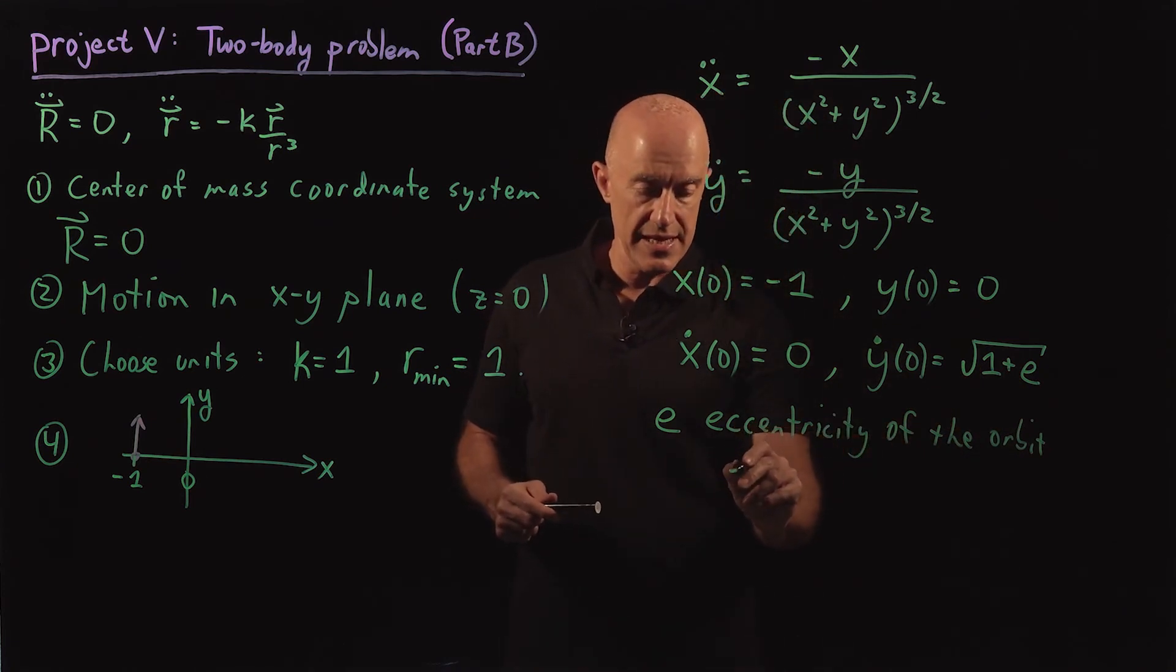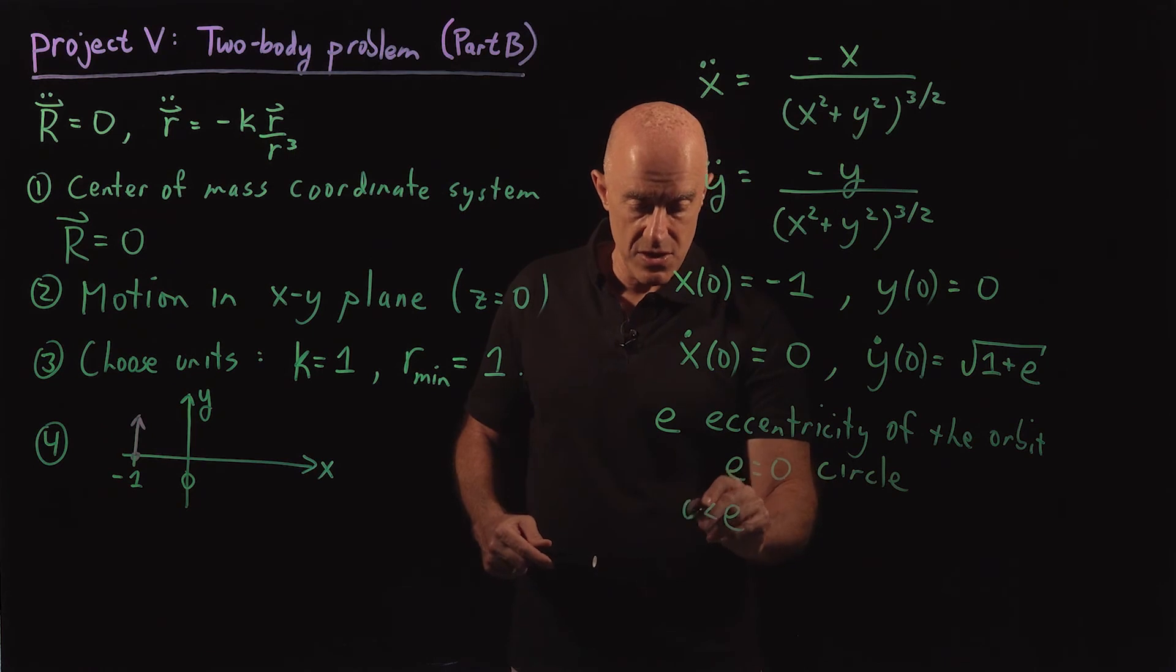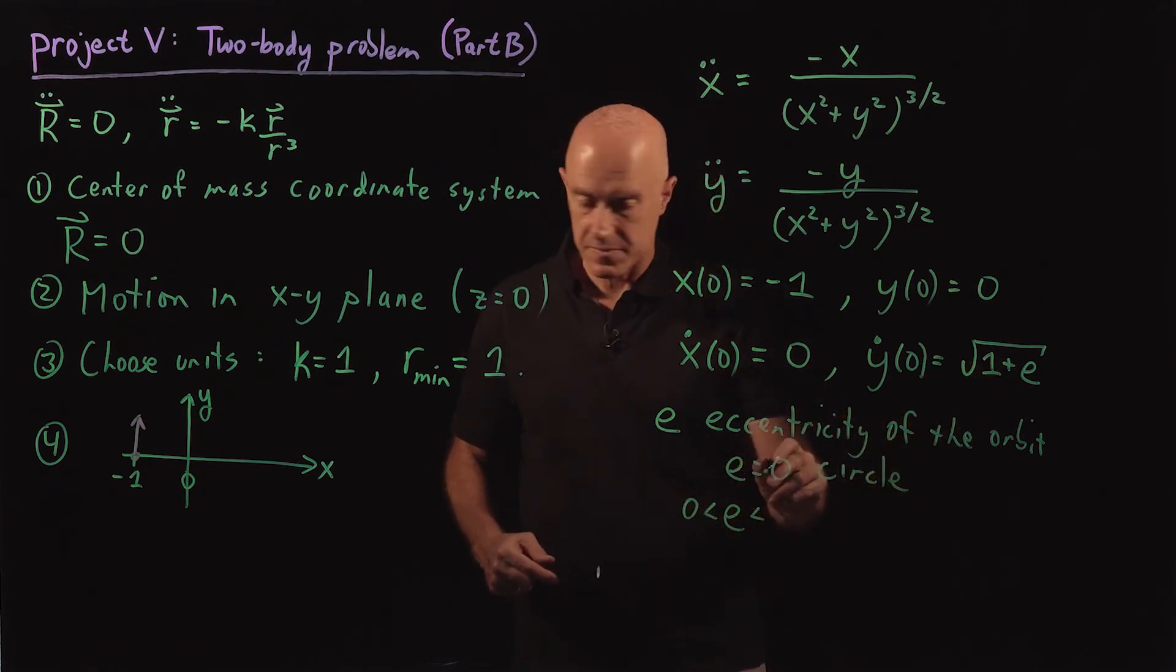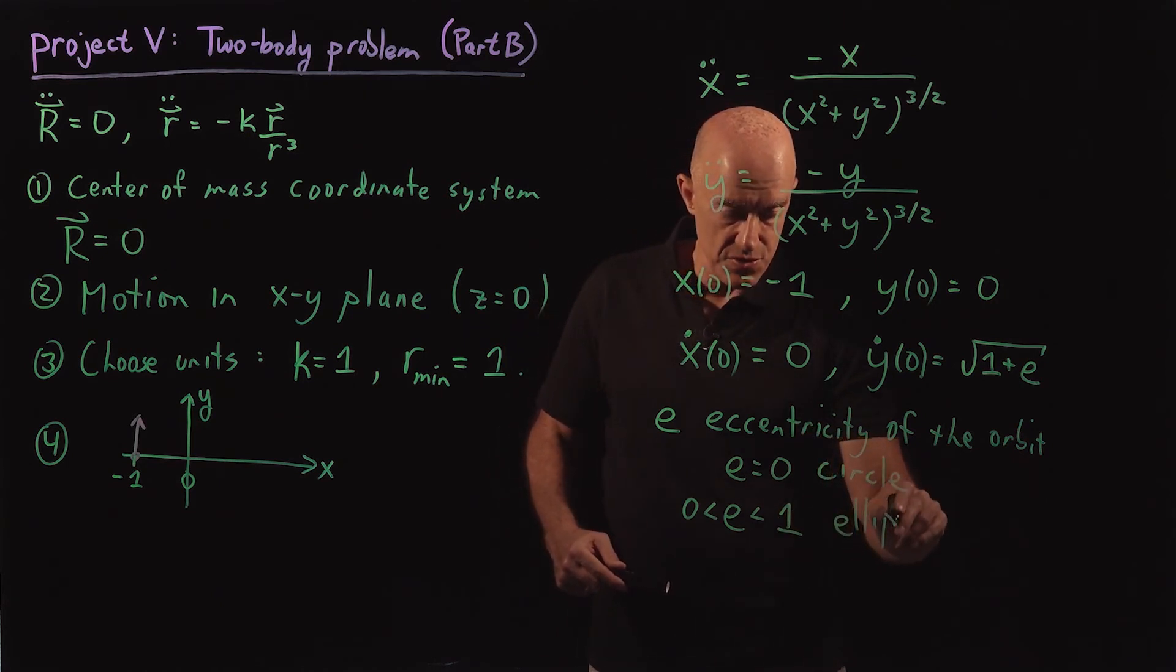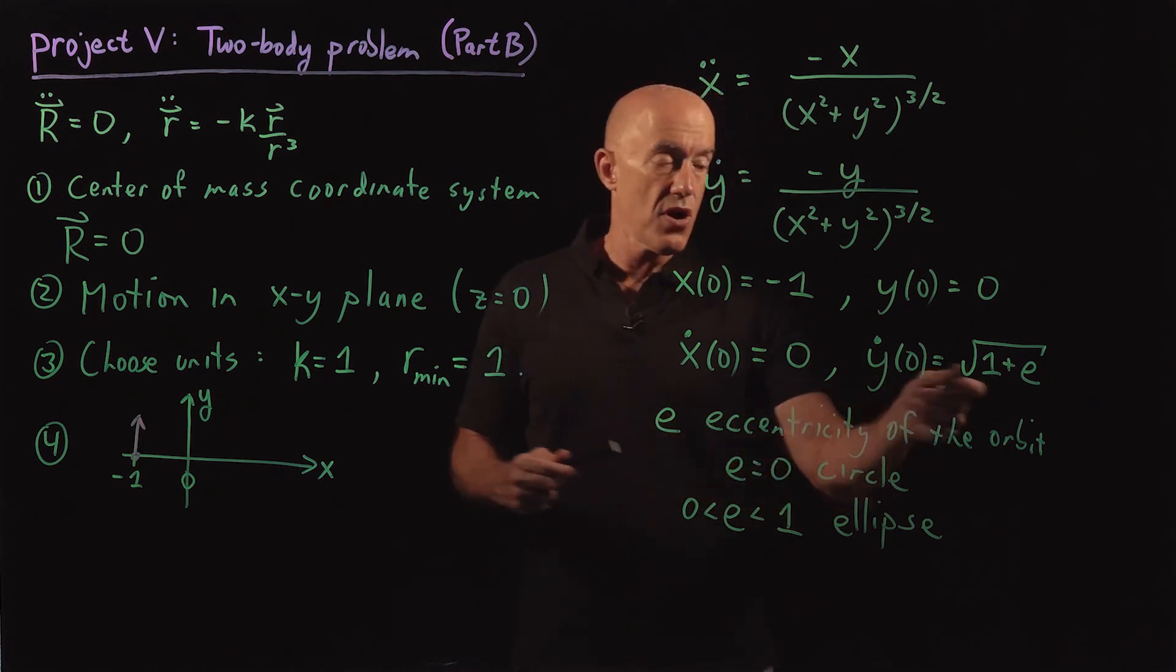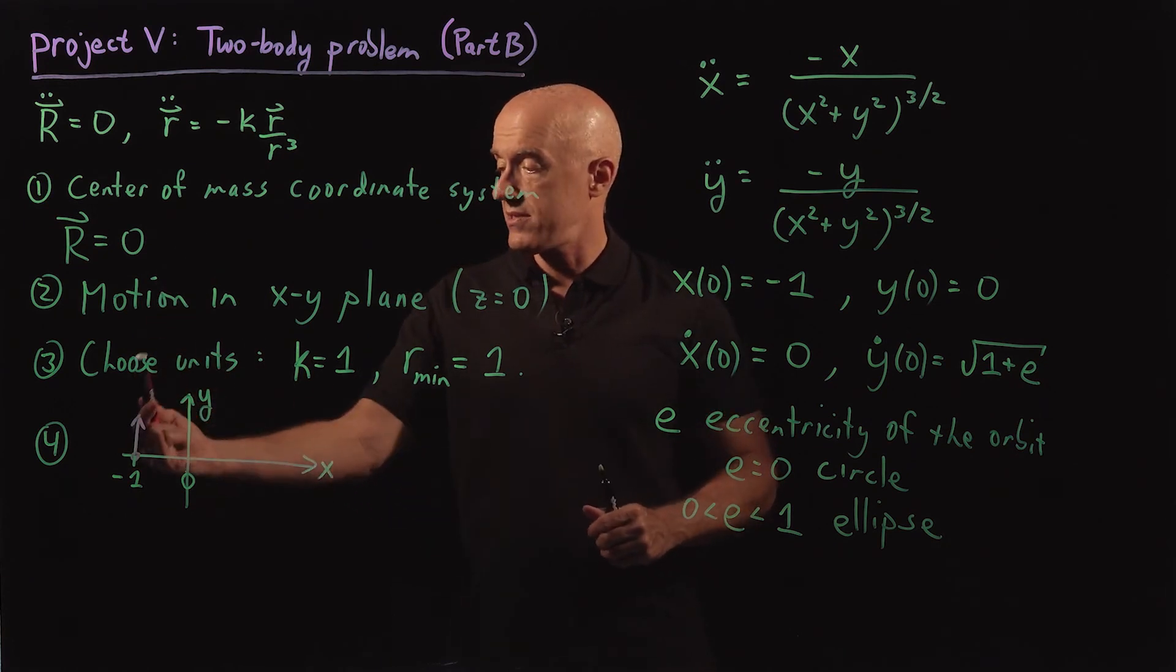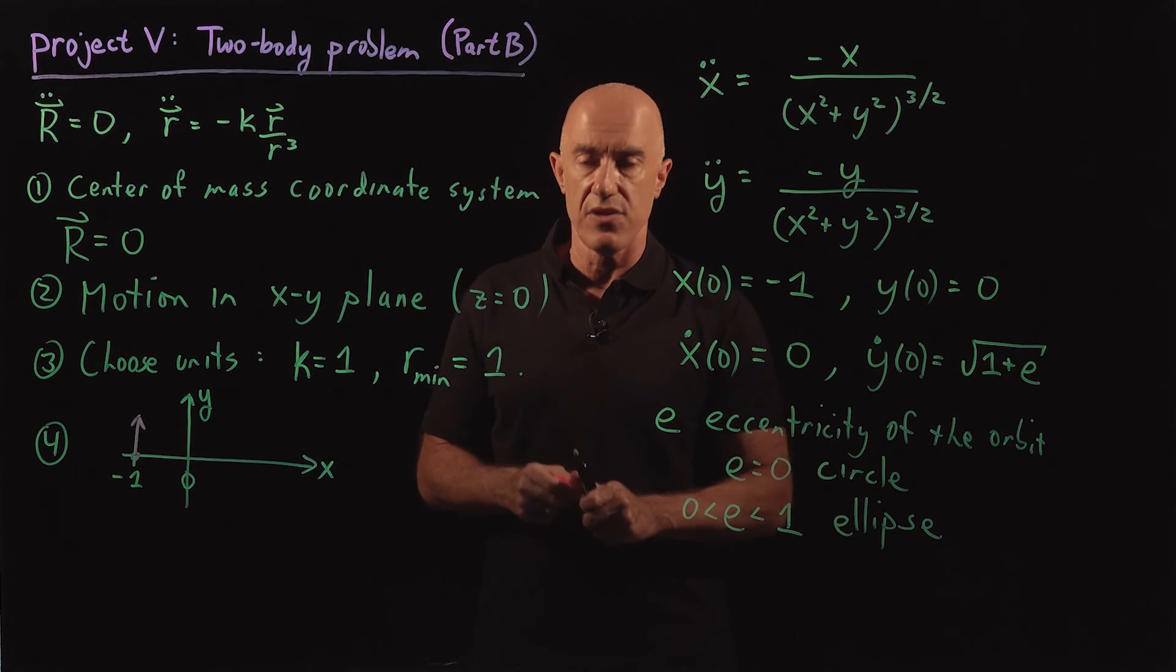So what that means is that e equals zero corresponds to a circle. And e between zero and one corresponds to an ellipse. So those are the two types of closed orbits. So if you start off with a velocity of one in these units, you'll end up with a solution that's a circle around the origin.